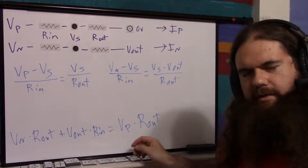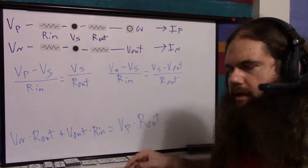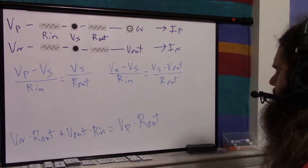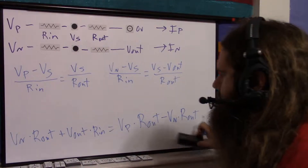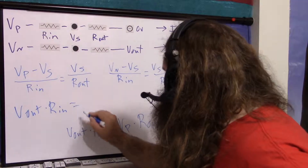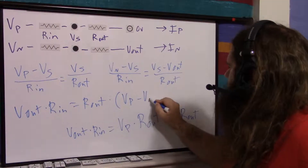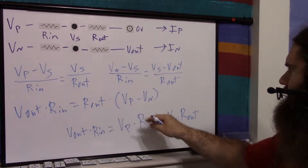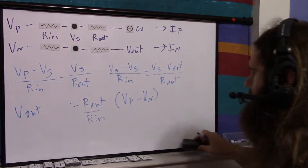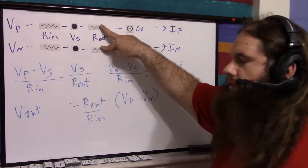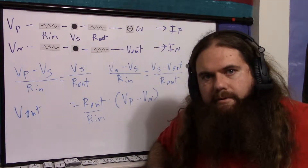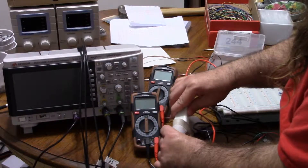Now we have only vn, vp, v_out, R_in, and R_out — exactly what we want. Rearranging to isolate v_out: bring vn·R_out to the other side to get v_out·R_in = R_out·(vp − vn), then divide by R_in: v_out = (R_out / R_in) × (vp − vn). There it is — R_out over R_in is our gain, and it's simply vp minus vn times that gain.